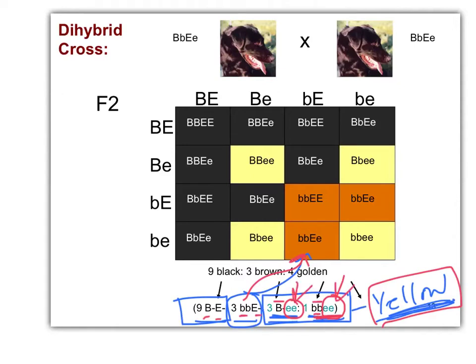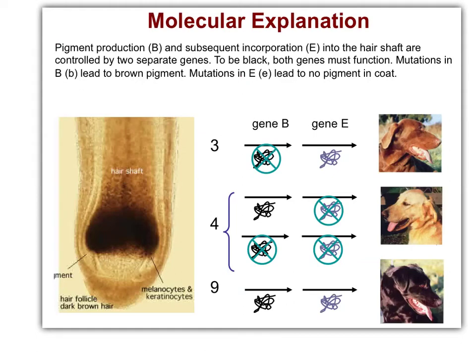In the recessive form, those alleles mask what's happening at the other gene. Two genes, one phenotype — coat color. We call it recessive epistasis because if it were just two genes one phenotype behaving normally, we'd still get a 9:3:3:1 ratio. Did we get 9:3:3:1? No. We got a 4 here — 9:3:4. That's how it works.